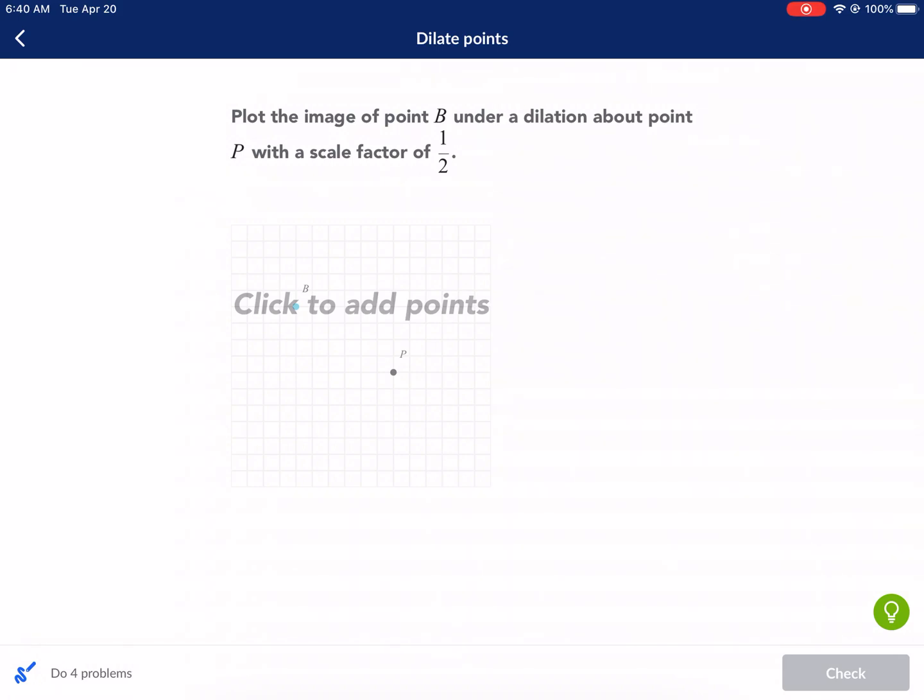Welcome, ladies and gentlemen, to another Khan Academy tutorial. We're doing dilate points today, a geometric concept, usually on the coordinate plane, but this is like an intro to dilations. Let's go ahead and get started. It says, plot the image of point B under a dilation about point P with a scale factor of one-half.